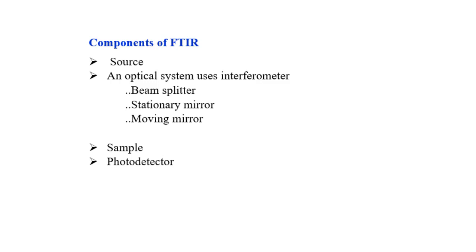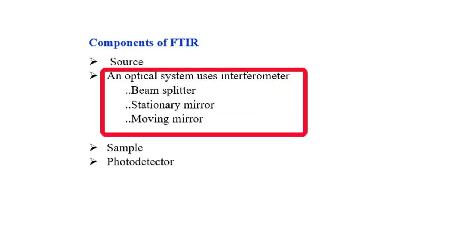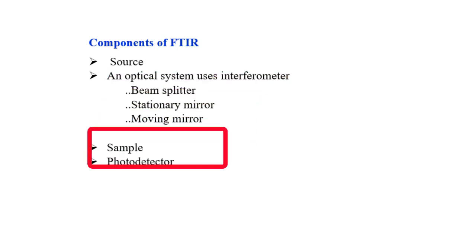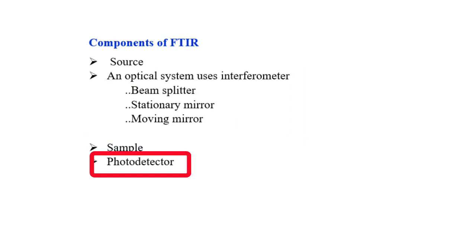What are the components of FTIR? The radiation source — normally Nernst Glower, Globar source, Tungsten lamp, or Mercury arc — is used as the source. The optical system uses an interferometer, which consists of a beam splitter, a stationary mirror, and a moving mirror. The beam splitter is made of a material with 50% reflectance. There must also be a detector — normally a pyroelectric detector is used.